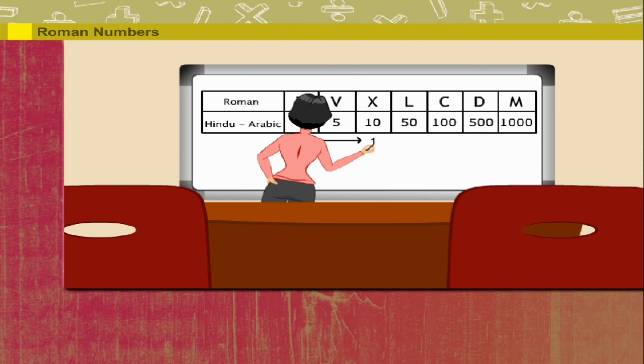And one thousand is written as M. X, V means ten plus five or fifteen. Thank you Minnie ma'am.